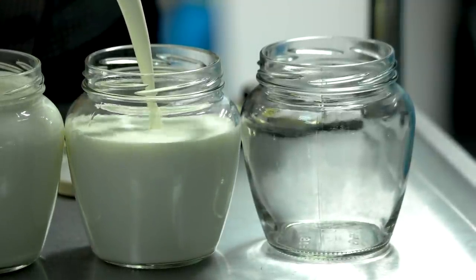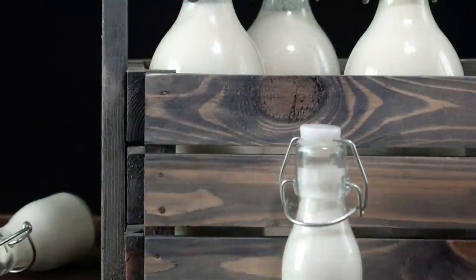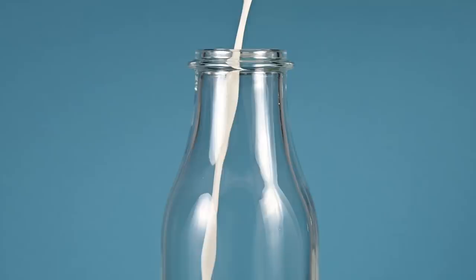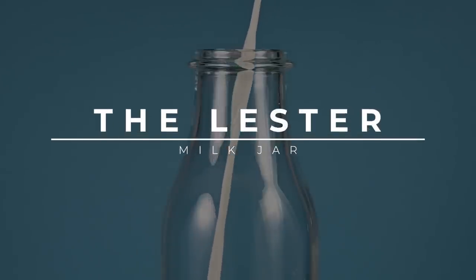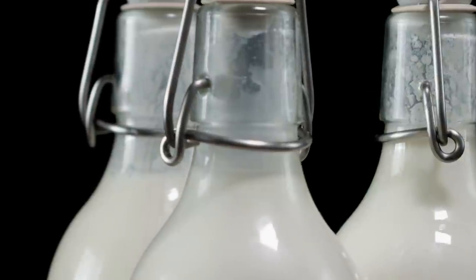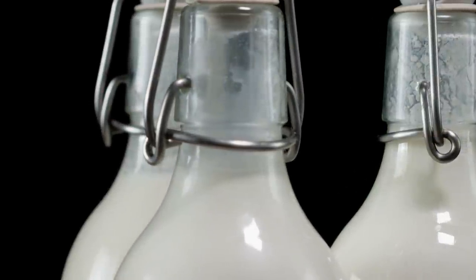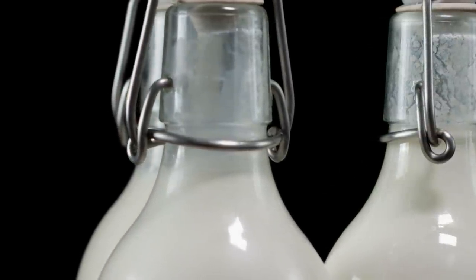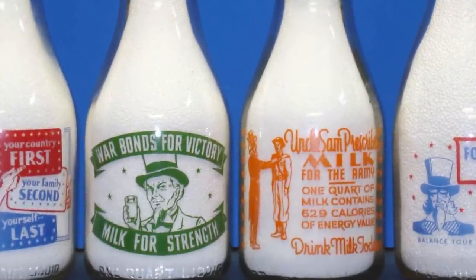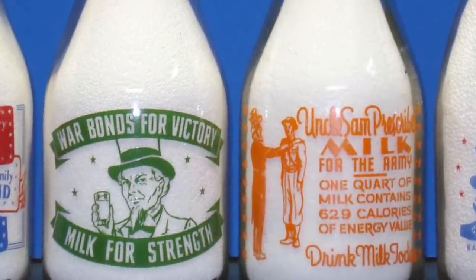About a hundred years or so after the first home milk deliveries began, the first glass milk bottle was patented. A cap didn't arrive until about five years later. By the 20s, designs and advertisements were etched onto the glass.